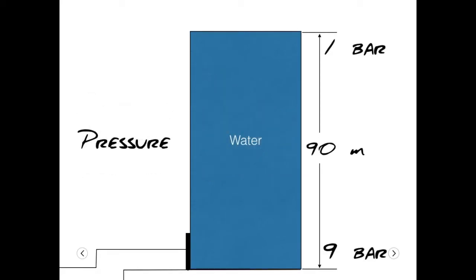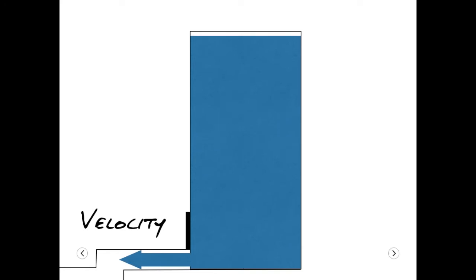Most espresso machines use 9 bar of pressure to force water through the grinds. That's the pressure at 90 meters underwater. When we open the pipe at the bottom of the tank, the water leaves at a speed given by the size of the pipe and the pressure behind it.